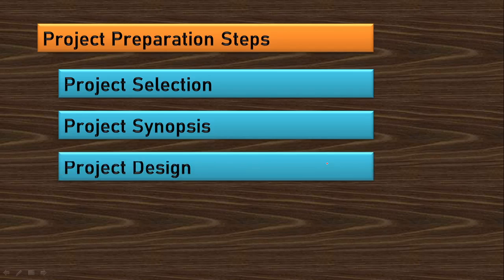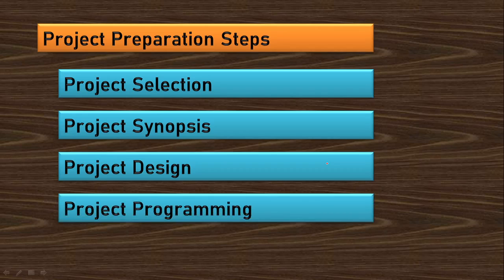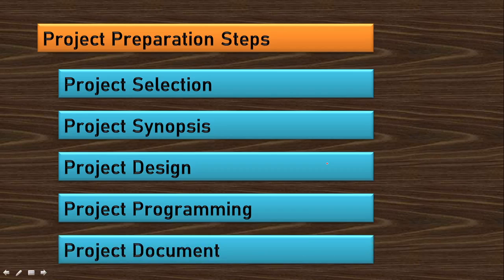Next, you need to design the project. What things should be there in the project we already discussed. You have department, doctor, outpatient, outpatient consultation, inpatient, and inpatient billing. You need to design properly — what fields are required. Then you need to do the programming and ensure the project works perfectly. Then you need to make the project document. Sample documents are available on our website for download.